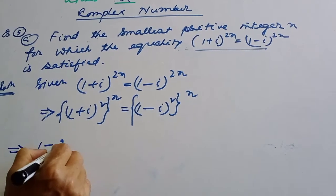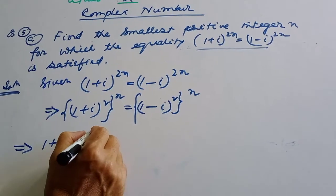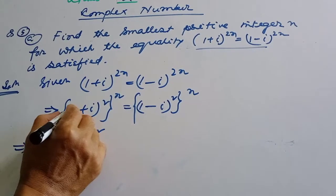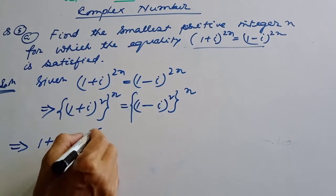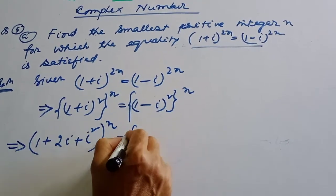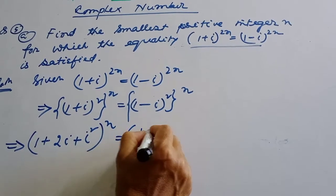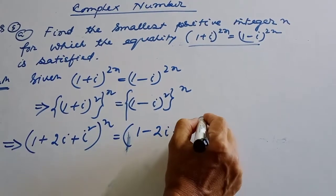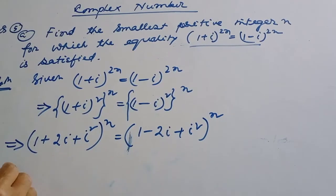Expanding: (1 + 2i - i²) whole to the power n — that is, a² + 2ab + b² — equals (1 - 2i + i²) whole to the power n.